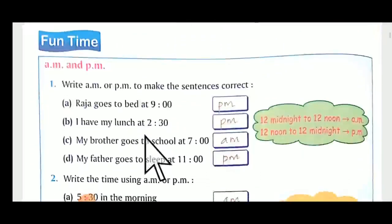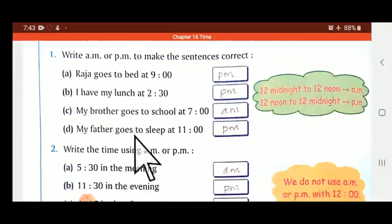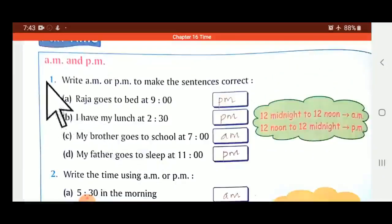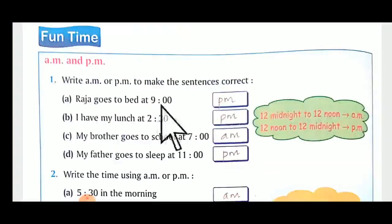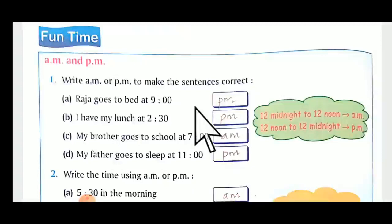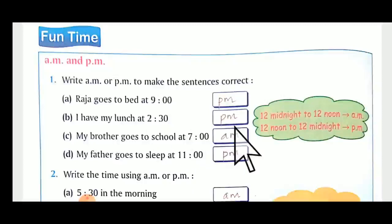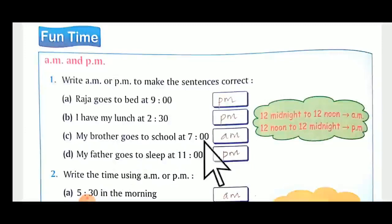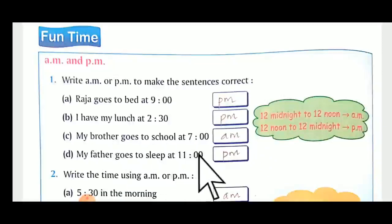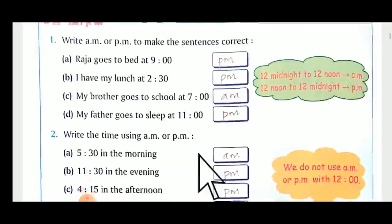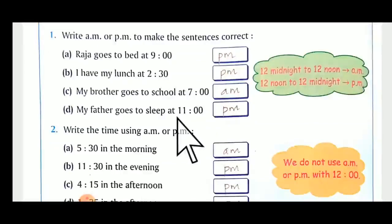Fun time — AM and PM: write AM or PM to make the sentence correct. Raj goes to bed at nine — you go to bed at night only, so it becomes PM. I have my lunch at two thirty — lunch we have in the afternoon, so it will be PM. My brother goes to school at seven — seven means it is in the morning, so seven AM. My father goes to sleep at eleven at night — that will be eleven PM.